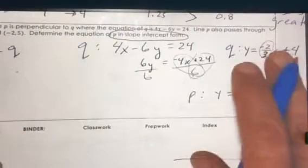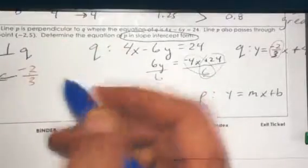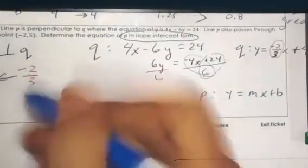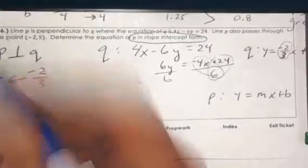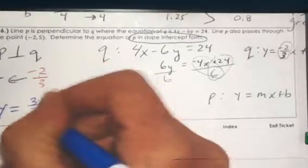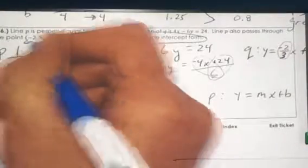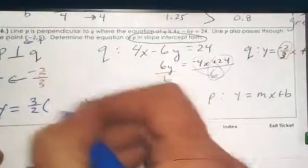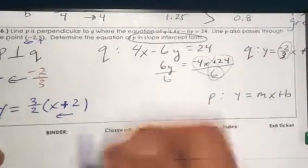So then we can take this negative two-thirds. Now Q is perpendicular to P, so we need to do the flip. Negative goes to positive, and then 2 over 3 goes to 3 over 2. So the slope of P is 3 over 2. Now with P, we'll say y equals three-halves times... And now let's bring this coordinate in. This says go left 2 and up 5. So to go left 2, we're looking at (x + 2), then up 5.